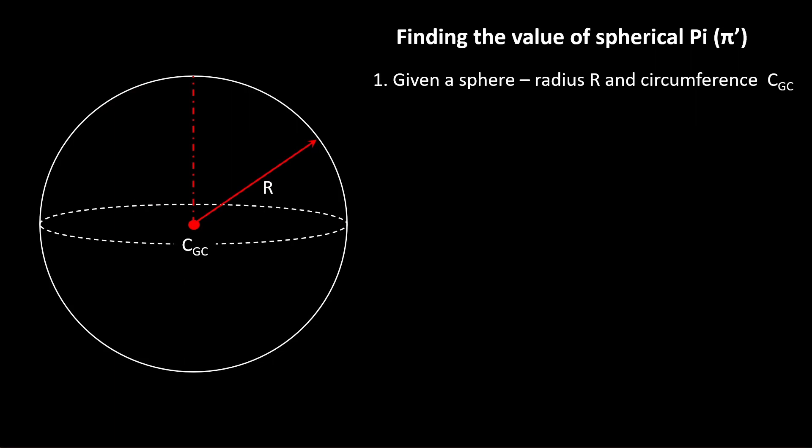Well, let's give it a try. We've got a given sphere with radius R and circumference C_GC for great circle—that being the largest circle you could possibly draw on a sphere. We want to find the circumference of another circle, C_α, and we need its diameter as well.